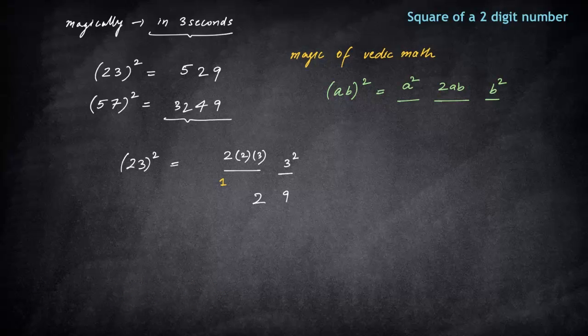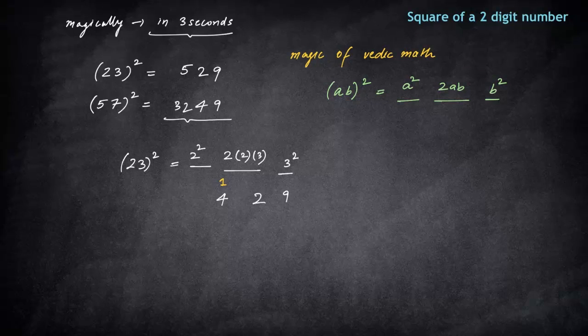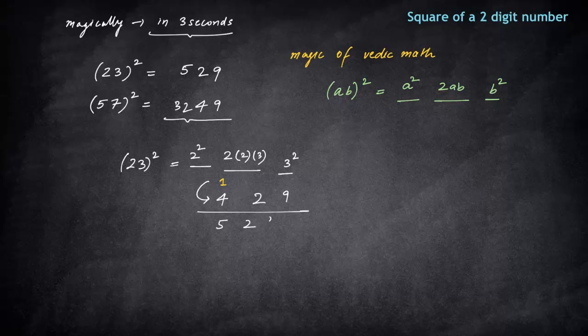Now what you will do? Third spot is being filled by 2 square. 2 square is 4, and there was a carry forward. That is why I gave you the answer 529. As simple as that. Can you see how quickly you were able to solve the square?